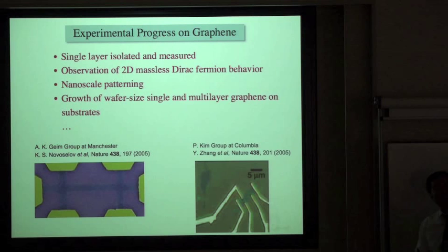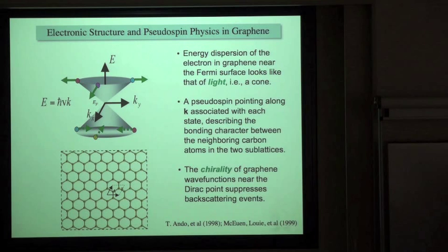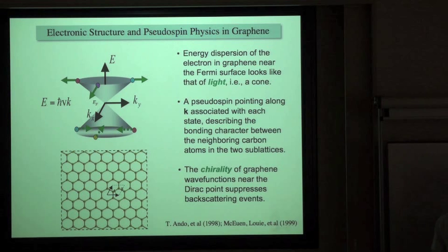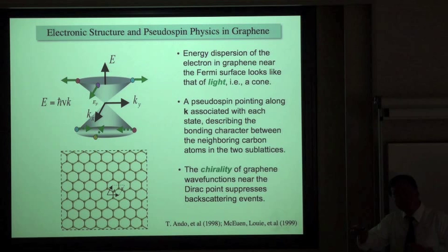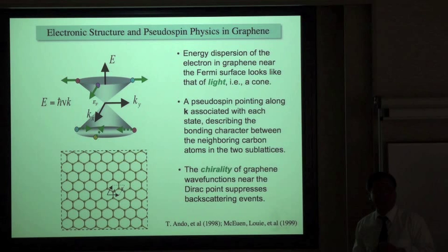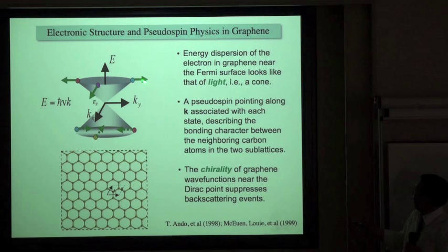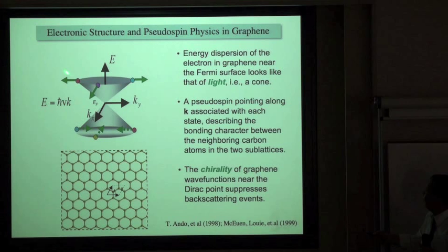Another unique property of the electronic structure of graphene is a new quantum number called pseudospin associated with each electronic state. The pseudospin is either aligned or anti-aligned with the wave vector, and it reflects the bonding character between the two atoms in the unit cell. A pseudospin pointing along the k-vector corresponds to a bonding state, while pseudospin anti-aligned with the wave vector corresponds to an anti-bonding state.